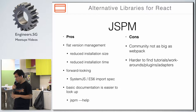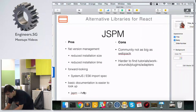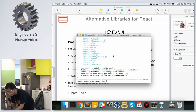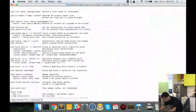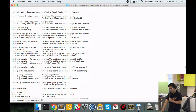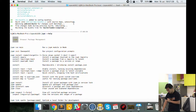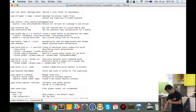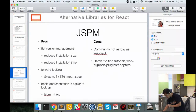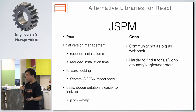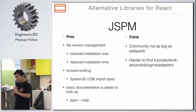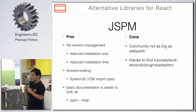I want to do a quick demo. This is what you will get if you type JSPM help — it shows you how you can run each command and a quick description of each command. The drawback, of course, is that it's not as well-known as Webpack. As a result, it's probably harder to get help if you run into some issue, or to find tutorials or boilerplates. But to me, I think it's worth the effort because of the benefits it offers.